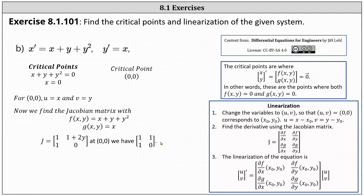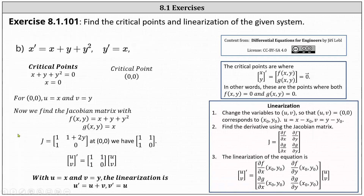We can now determine the linearization of the system. With u equal x and v equal y, we have the derivative of the vector (u, v) equals the Jacobian matrix — one, one, one, zero — times the vector (u, v). This gives the linearization: u prime equals u plus v, and v prime equals u.